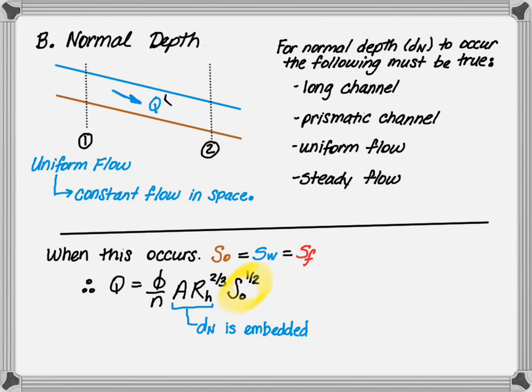The flow is equal to phi divided by roughness times the cross-sectional area times the hydraulic radius to the two-thirds power and the bed slope to the one-half power. The normal depth is embedded in the area and hydraulic radius.